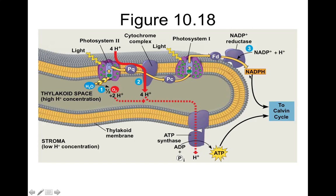Those electrons still have a lot of energy — the electrons in NADPH actually have more potential energy than the electrons we pull off of glucose in respiration. That makes sense because, from the second law of thermodynamics, we can't get more energy from breaking down glucose than we put into producing glucose. This is all very analogous to what's happening in the mitochondria, only it's happening in the thylakoids. Next we need to take that reducing power and ATP and channel it to the Calvin cycle to fix some carbon.